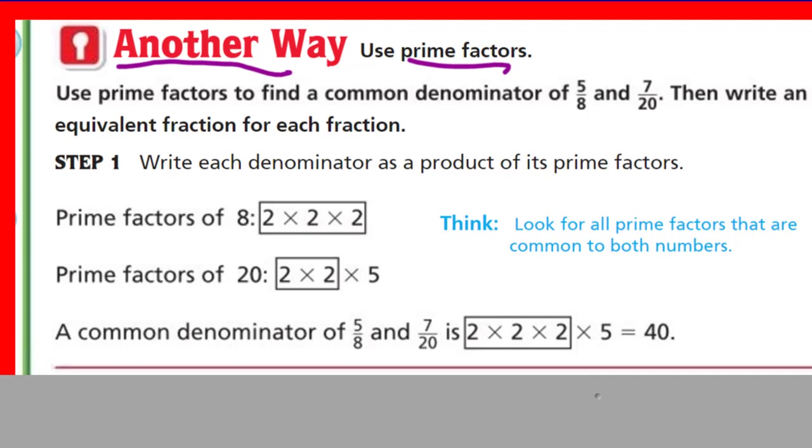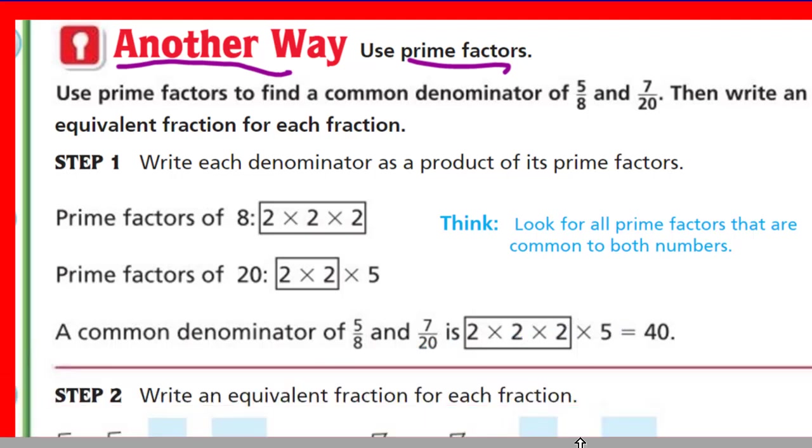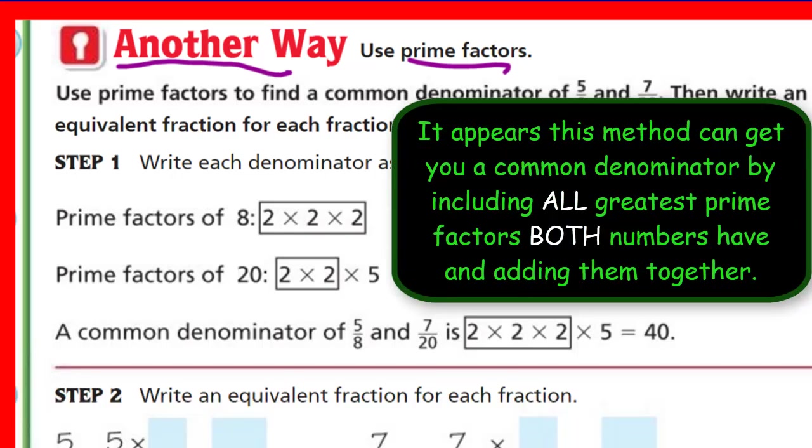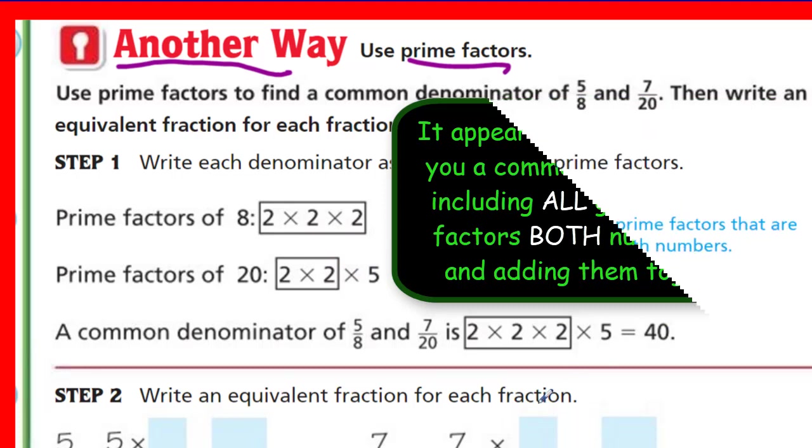Use prime factors to find a common denominator of 5/8 and 7/20. Then, write an equivalent fraction for each fraction. Write each denominator as a product of its prime factors. So, the prime factors of eight is 2 × 2 × 2. Remember how we did this was when we did our little factor tree. You could do four times two. Two is a prime factor. Four is not, because you could do two times two, and then look like that. What do you know? 2 × 2 × 2. Prime factors of 20. We know our 2 × 2 × 5. Two times two is four. Four times five is 20. So, you can see how that would be true if we did a factor tree as well.